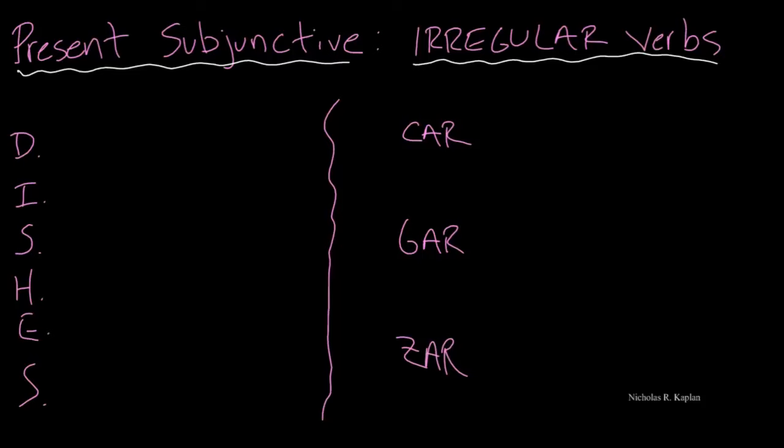Alright, well there are two categories of irregular verbs that we want to look at with the present subjunctive. And the first one is what I like to call, and what a teacher friend of mine gave me, the dishes. Alright, no one likes to do the dishes, but you have to do it. It's kind of like irregular verbs.